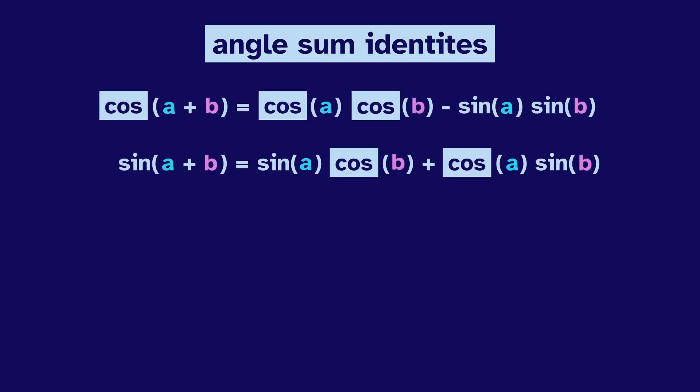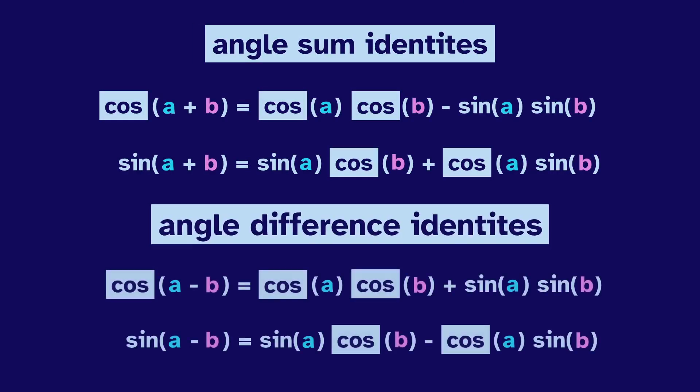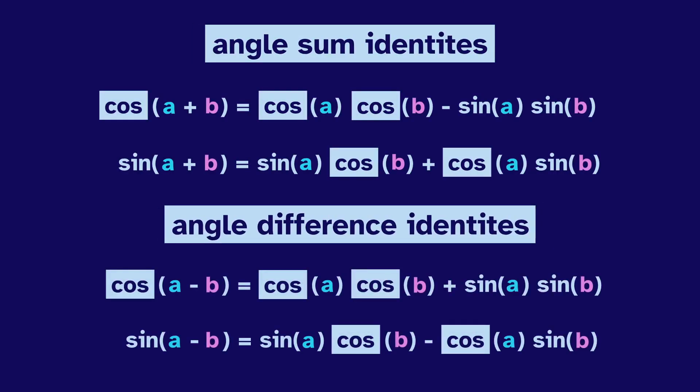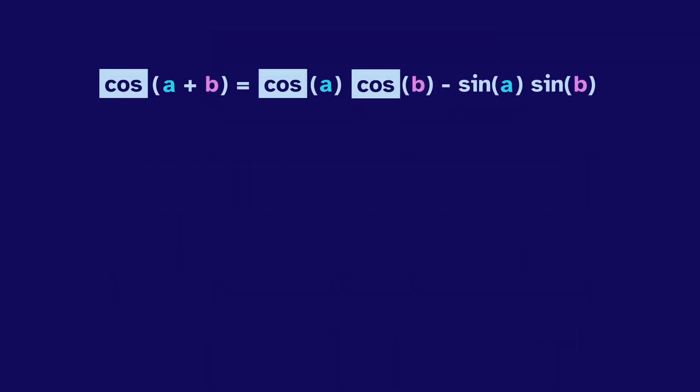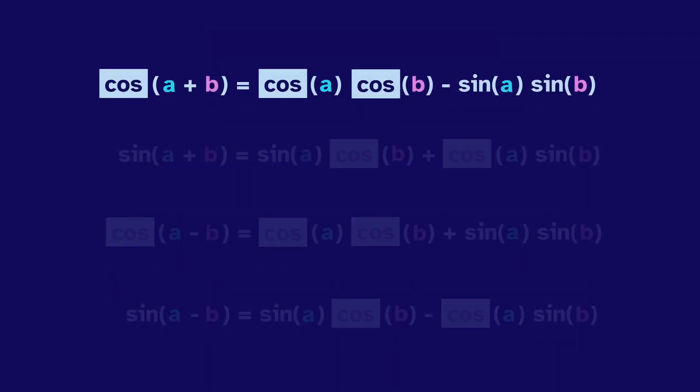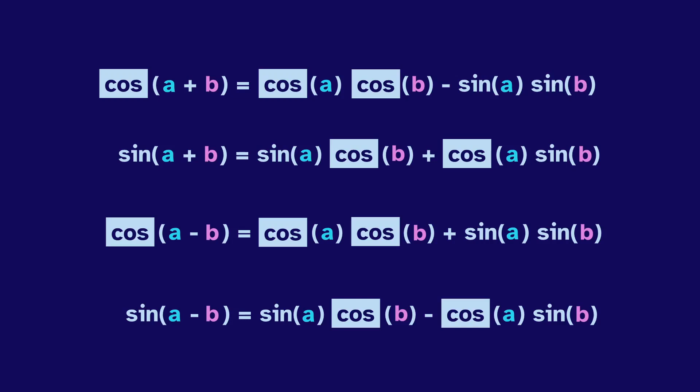The angle sum identities and angle difference identities can be terrific tools for tough tasks in trigonometry. But they're hard to remember. It wouldn't be so bad if there were only one identity, but there are four of them, and they all look really similar. So what do we do?